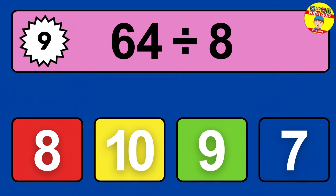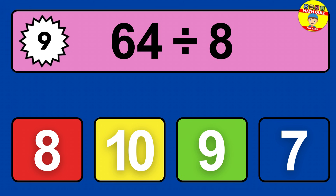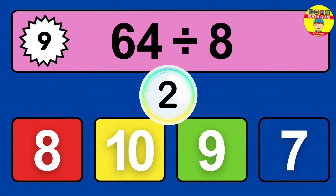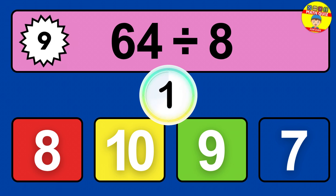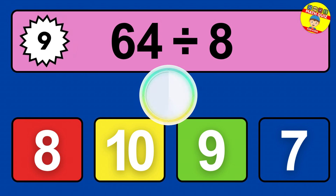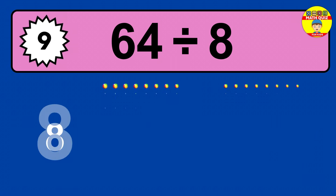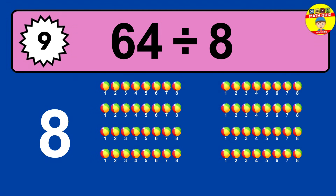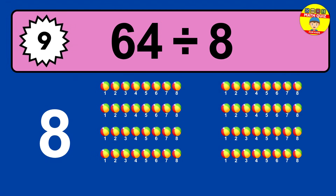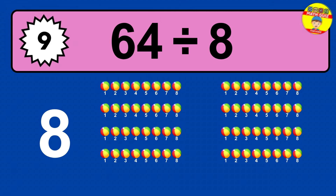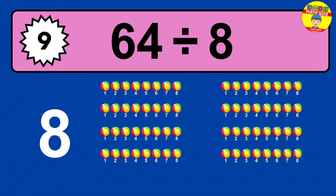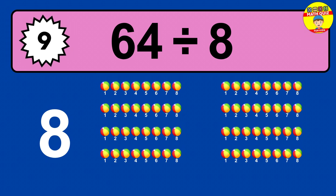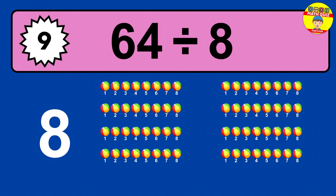64 divided by 8 — time to think. Let's go to the solution. Divide the number 64 by 8. Each group contains 8 units, so dividing 64 by 8 results in 8 equal groups. Thus, the result is 64 divided by 8 equals 8.